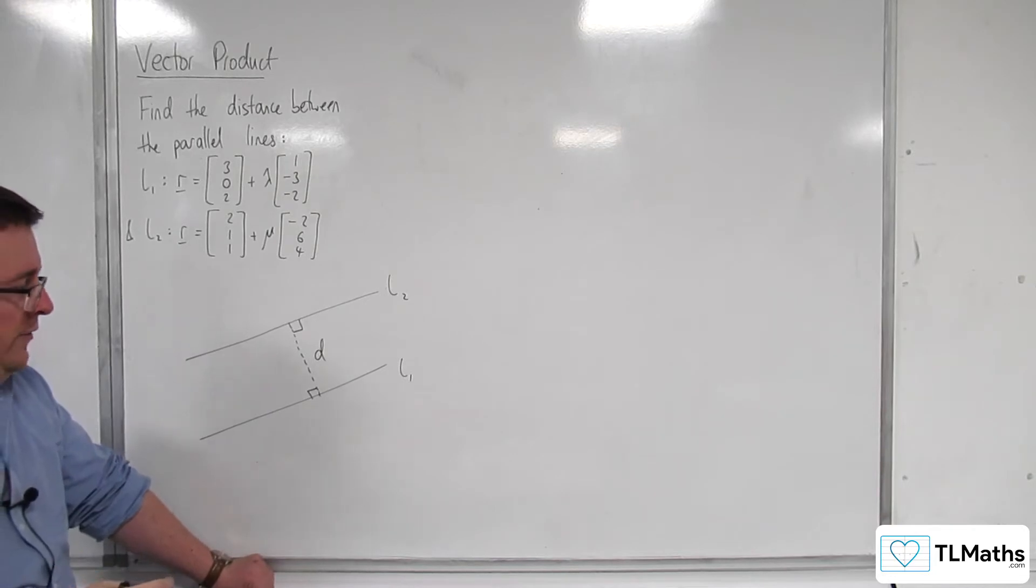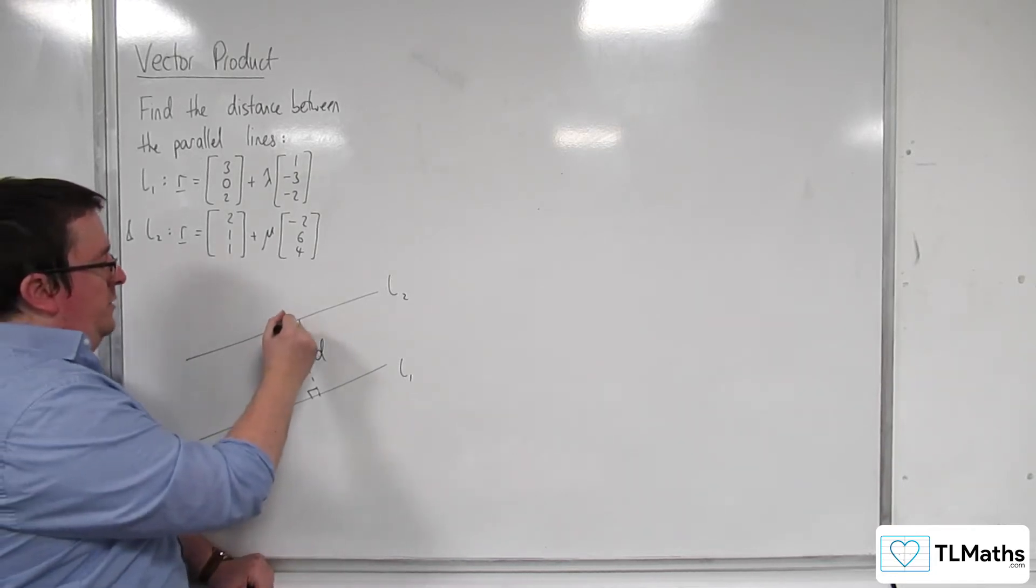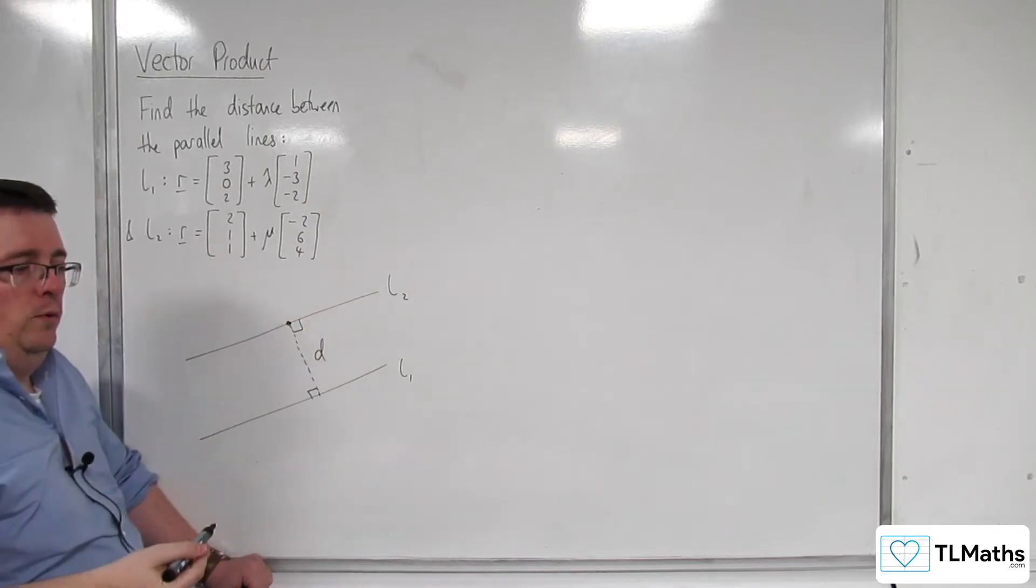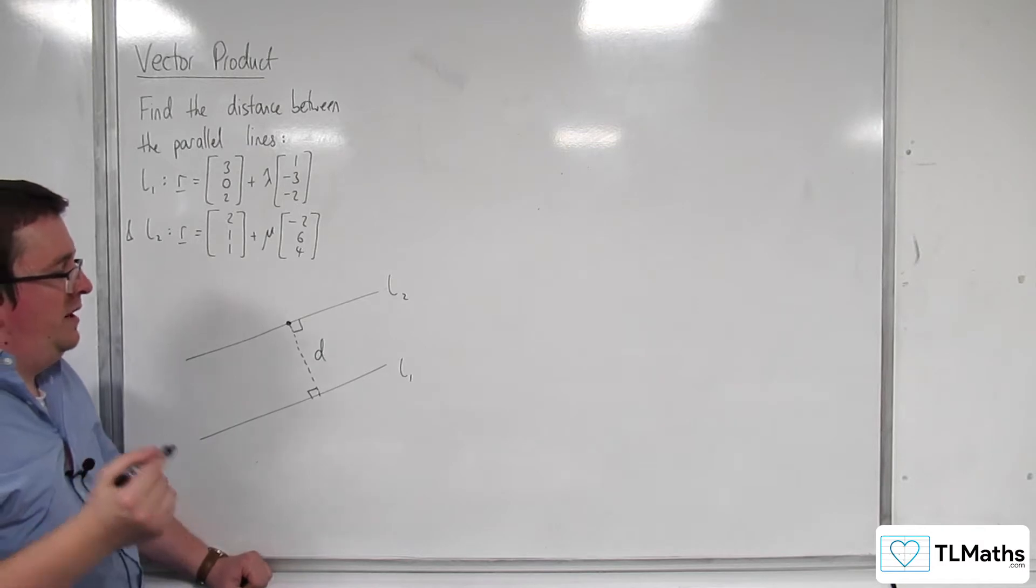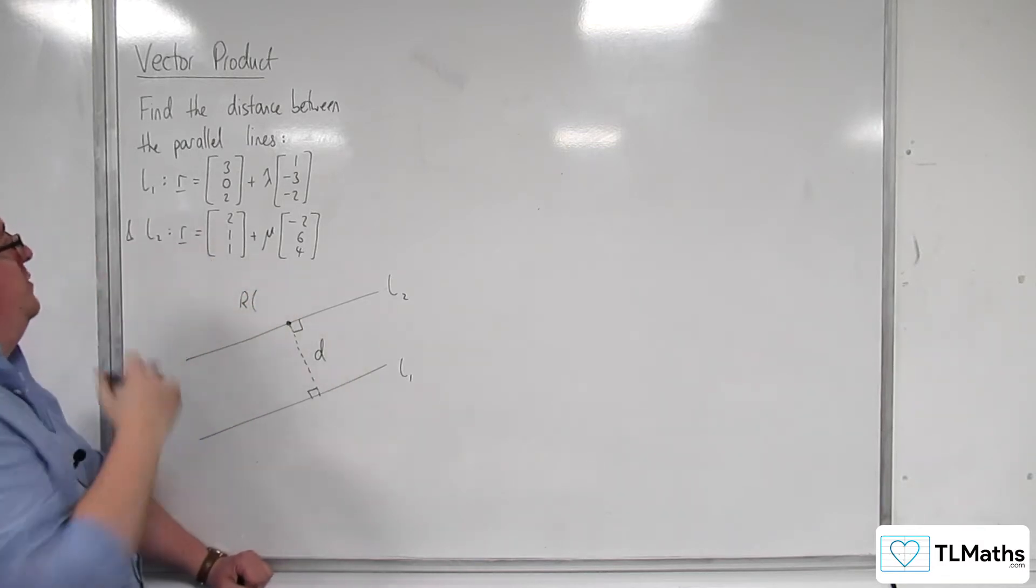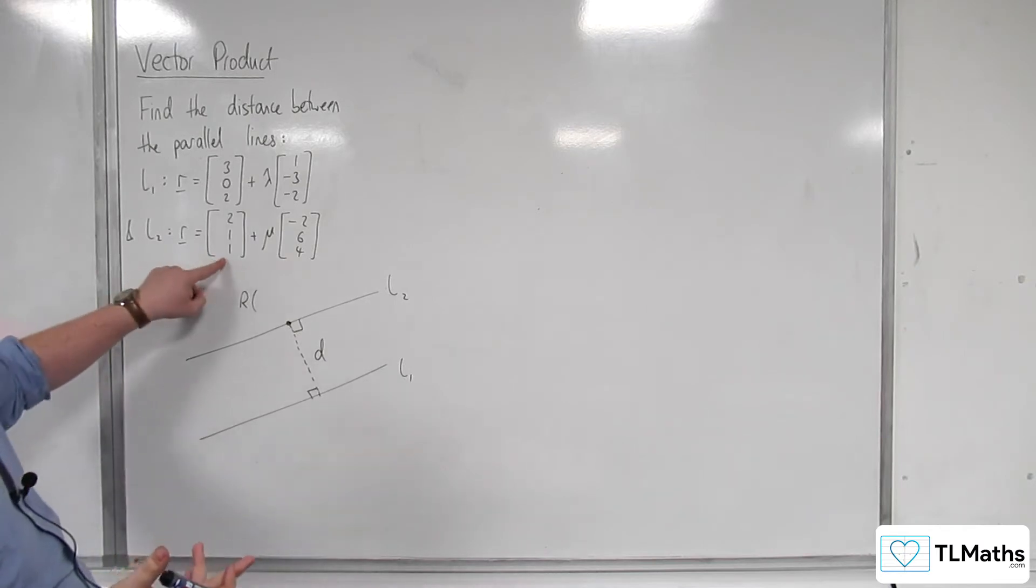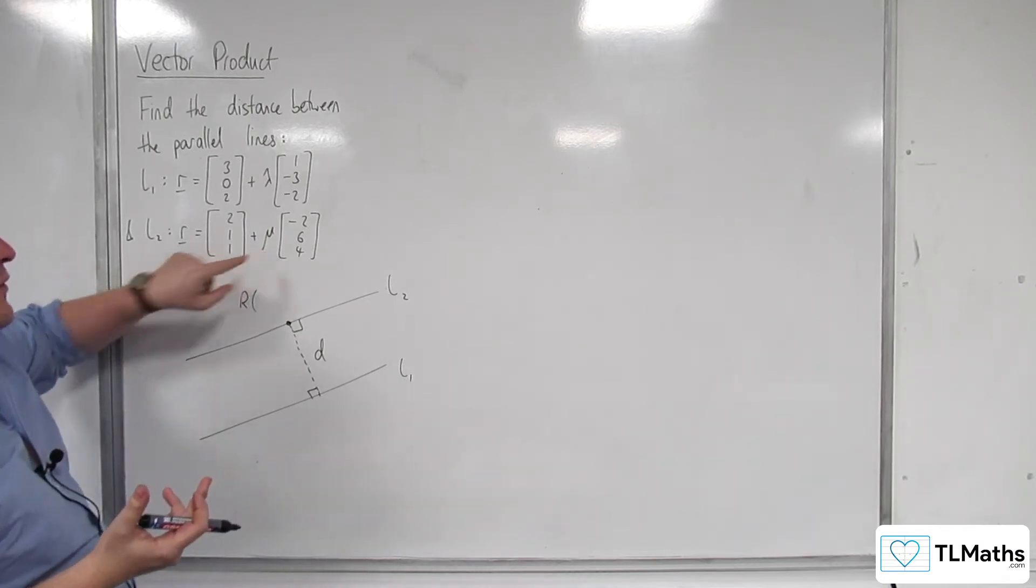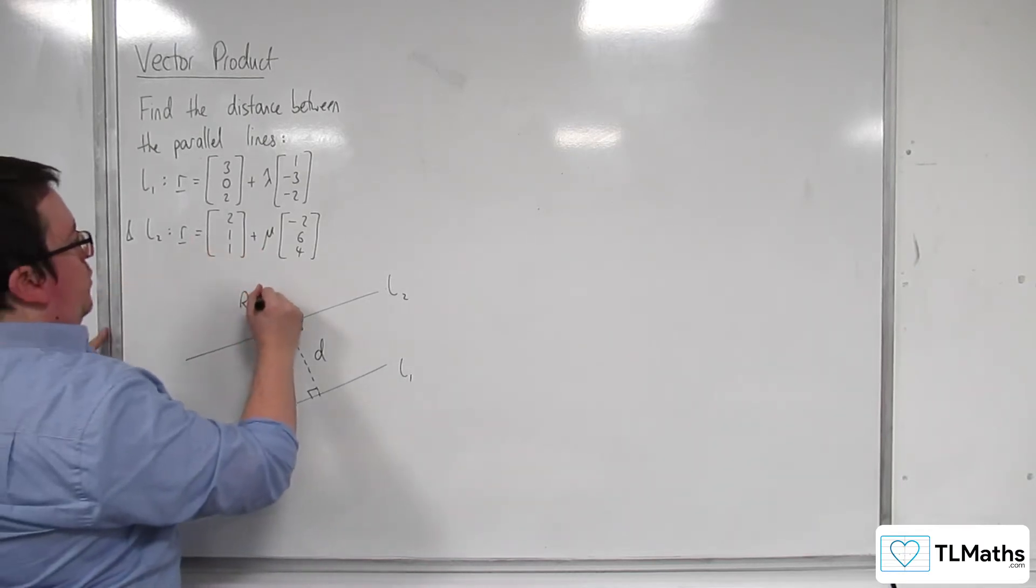So what I'm going to do is I'm going to say, for this I'm going to need some point on L2. Let's say that that is the point R. And for the point R, I'm just going to choose a point that's on the line, so 2, 1, 1. I'll take mu as 0, so that's going to be 2, 1, 1.